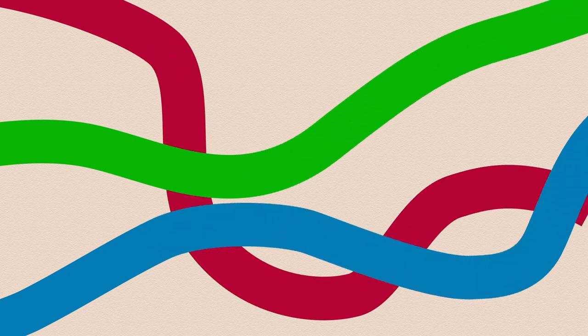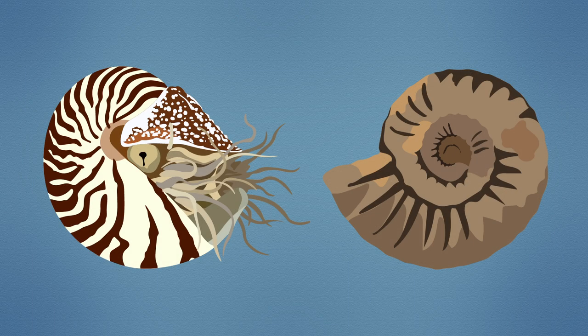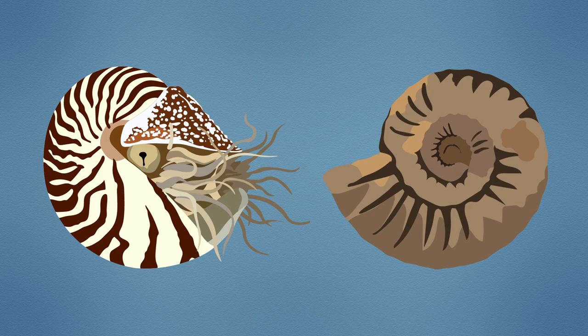Following no set trajectory, lineages will ebb and flow, displaying different traits and forms. Sometimes those forms may resemble those that have come before, but as always, evolution has still been occurring.